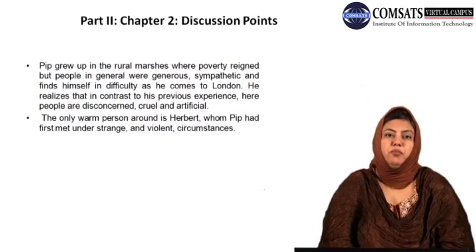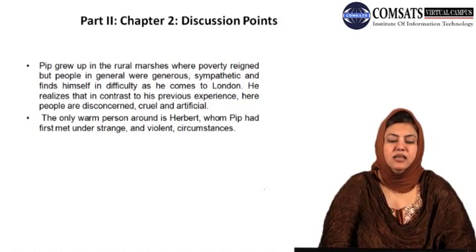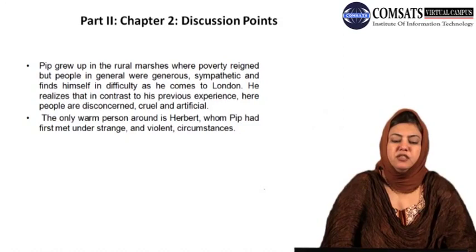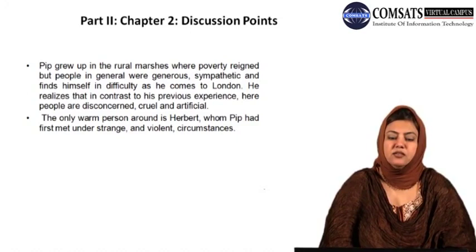Important discussion points with reference to Chapter Two: Pip grew up in the rural marshes where poverty reigned but people were generally generous, sympathetic, and kind. He finds that in contrast to his previous experience, people in London are disconcerned, cruel, and artificial. The only warm person around is Herbert, whom Pip had first met under strange and violent circumstances, yet who represents the innocence and simplicity of the first phase of Pip's life.